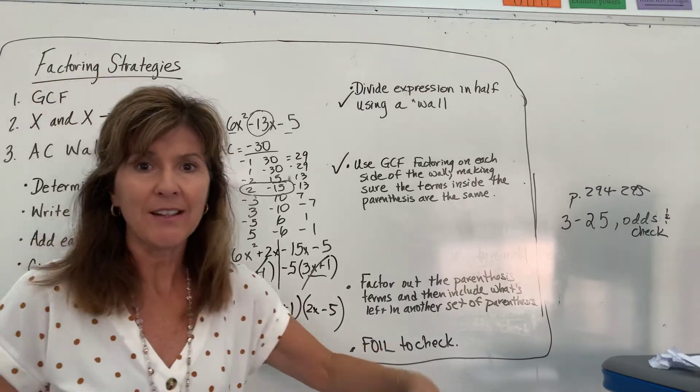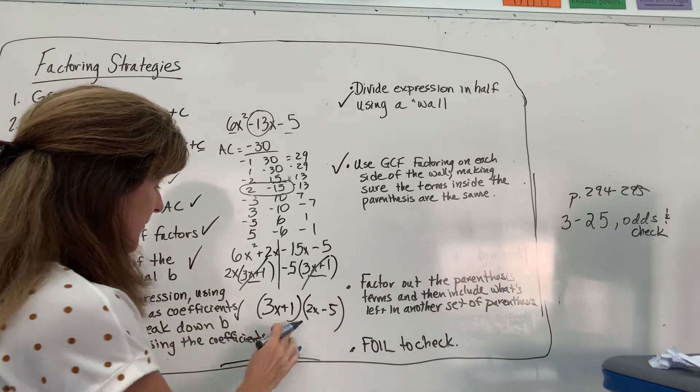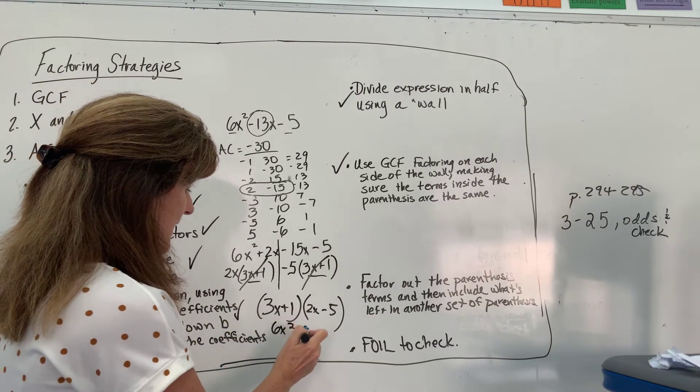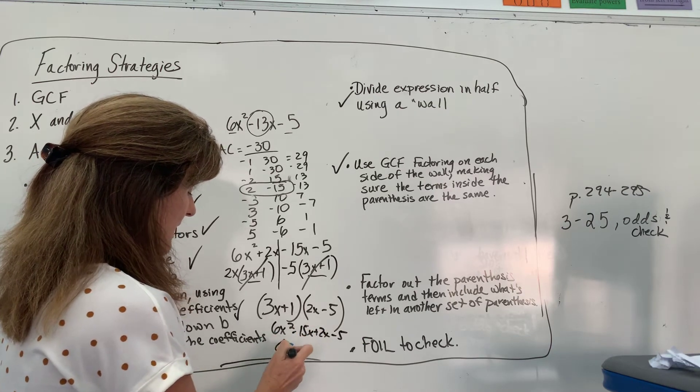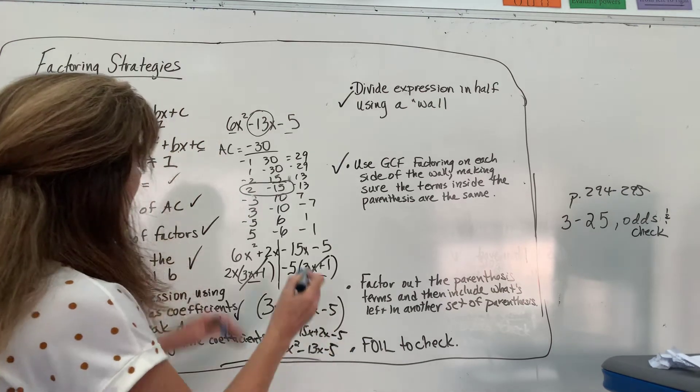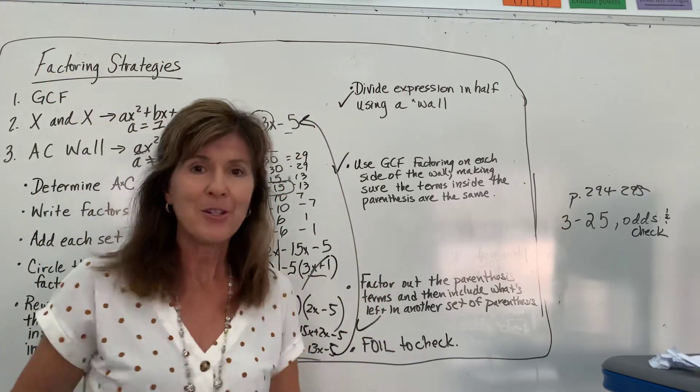So, FOIL to check. This is when it's really good to know how to FOIL. So, I'm going to do the first. It's going to be 6x squared minus 15x plus 2x minus five. And that is 6x squared minus 13x minus five. And that is the same here. So, I'm good.